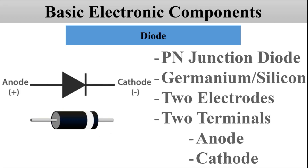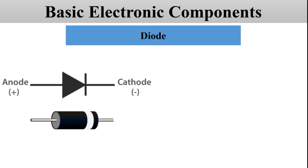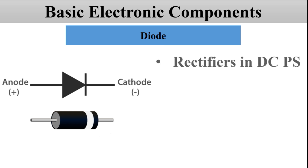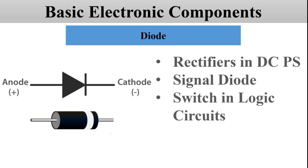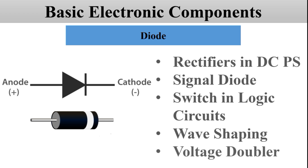Now let's see the applications of the diode. It is used as a rectifier in DC power supplies. It is used as a signal diode in communication circuits. It can also be used as a switch in logic circuits used in computers. It is also used in wave shaping circuits — in clipping and clamping circuits — and it is also used in voltage doublers, triplers, and quadruplers, which are basically voltage multiplier circuits.